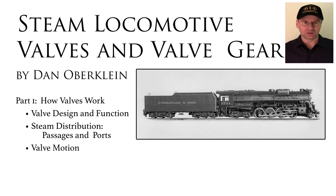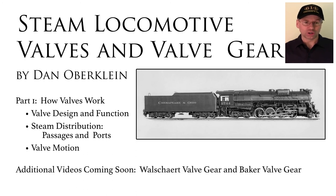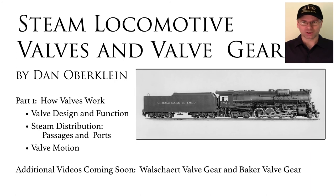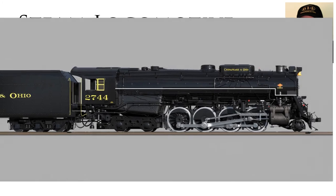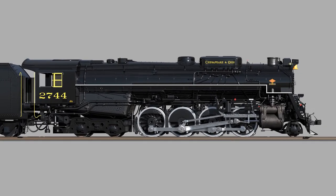And valve motion. Before we can understand valve gear, we first need to understand the kind of motion the valve needs so it can produce the correct admission and exhaust of steam from the cylinder. In later videos, we'll look at Walschaerts and Baker valve gear and see how they provide the motion to allow the valve to switch steam into and out of the cylinder properly. To illustrate the valve operation, we'll use the running gear of the C&O class K4 Kanawha type — a 2-8-4, one of the famous Van Sweringen Berkshires, and a fine example of modern steam design at the height of its development.